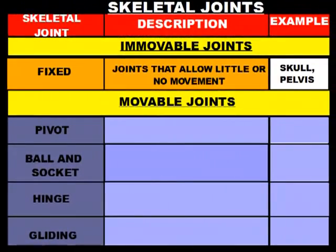That's it for our immovable joints — there's only one type. So we're going to move on to the movable joints. Movable joints are joints that allow movement throughout the body, enabling us to carry out all different types of motions that we need throughout our everyday lives.